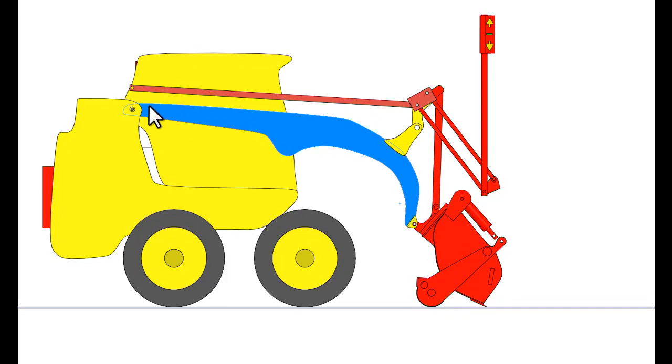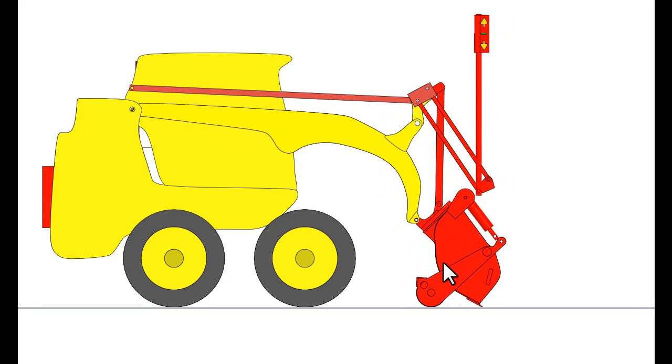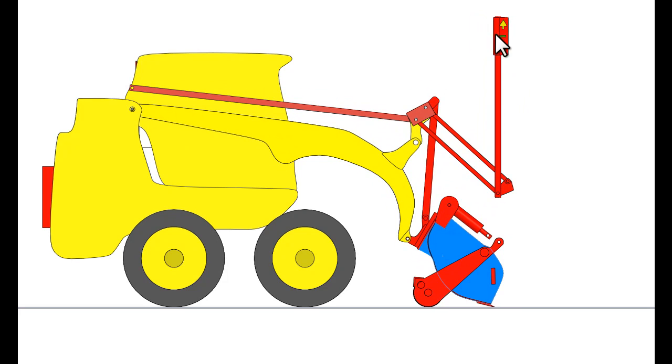But you could hook it to your loader arms and have it go up and down just like a dozer blade arms go up and down to keep this on grade. But the neat thing is anywhere you roll your bucket, it keeps the exact distance from the center here to your blade.